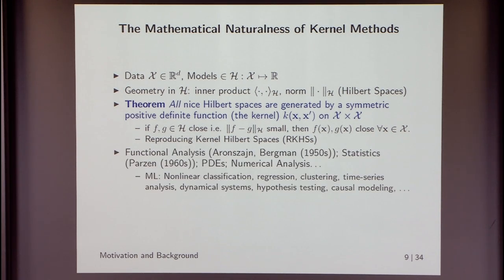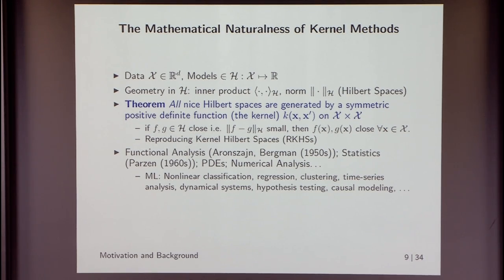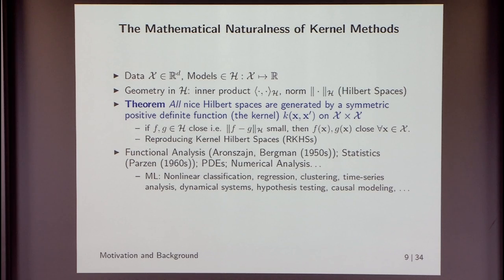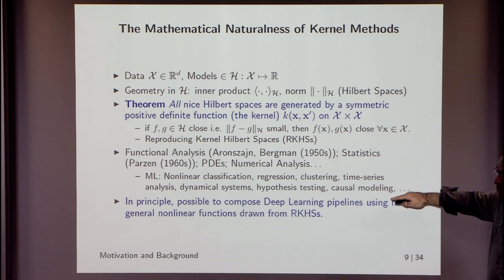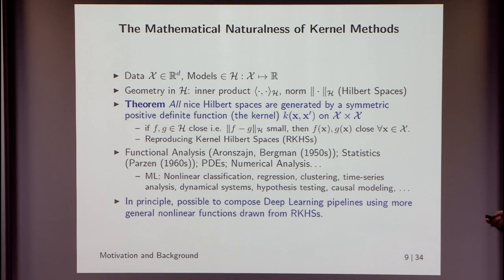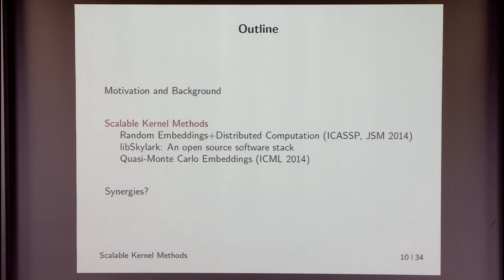These Hilbert spaces with this property are called Reproducing Kernel Hilbert Spaces (RKHS), and because they are so foundational they arise everywhere — their history traces back to Aronszajn and Bergman in functional analysis in the 1950s, Parzen applied them to time series analysis in the 1960s, they appear in PDEs, numerical analysis, and then smoothly found their way into machine learning. Another reason: if you want to do deep learning, you can in principle compose a deep learning pipeline using functions drawn from an RKHS — they remain relevant in that context too.